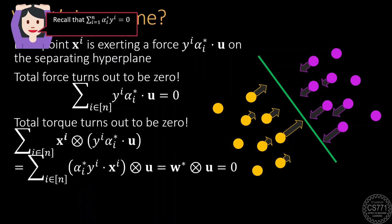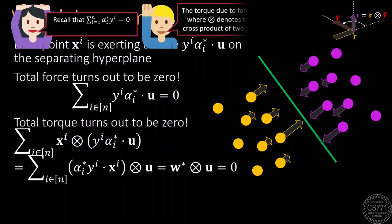We find that the total torque due to these forces is also zero. Recall that if a force f is applied at a point r, then the torque due to the force is the cross product of the vectors r and f. The total torque in our case turns out to be the cross product of w* and u which is zero since they are parallel vectors. This means that the forces will not let the hyperplane rotate either. This result holds for higher dimensions as well by using a more complicated definition of the cross product.